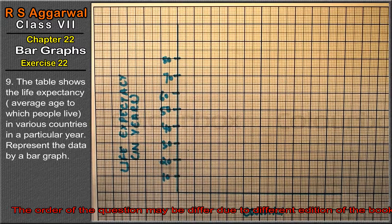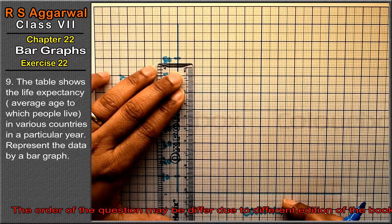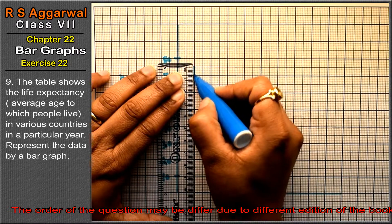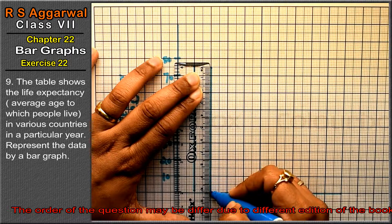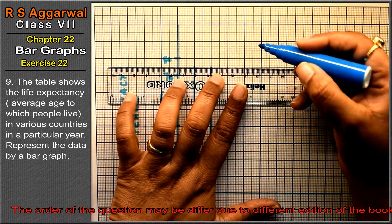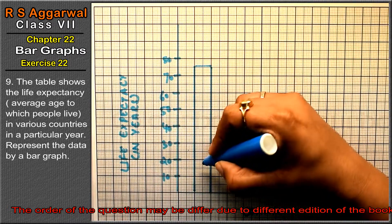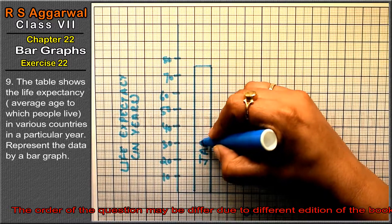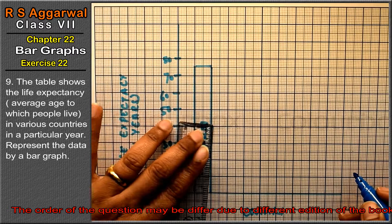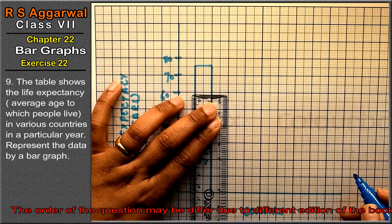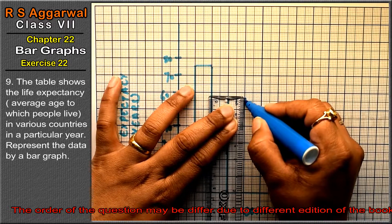Now the first country is Japan with 76 years. We locate 70 on the scale and go 6 points above it to reach 76. This is our Japan bar. Next is India with 57 years - we go to 50 and take 7 points above. This is our India bar.